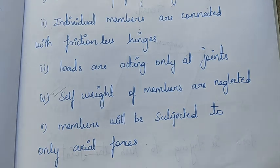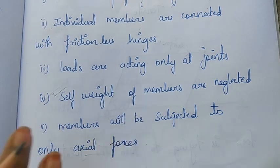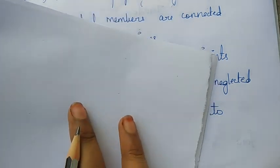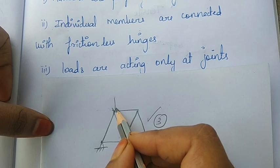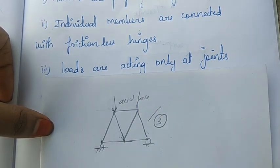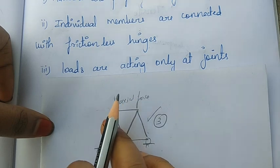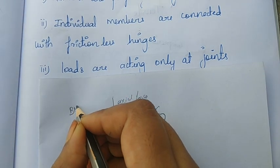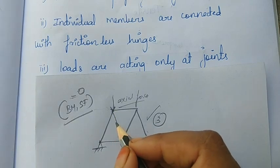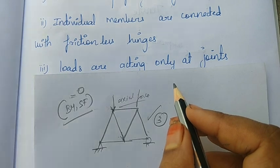For plane frames you analyze reactions and support reactions. In truss (stress) analysis, we consider only the axial force in members. If you apply a load, there is axial force. With axial force, there is no bending moment and no shear force — these two components are zero. The axial force is either compression or tension.